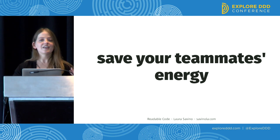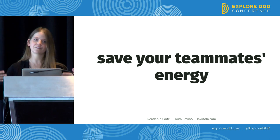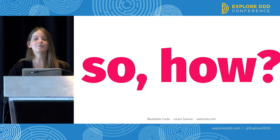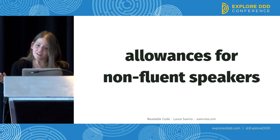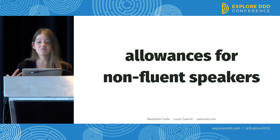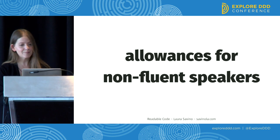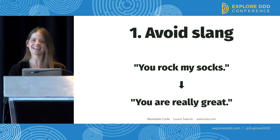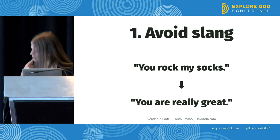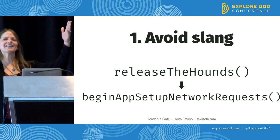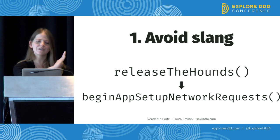So let's imagine that you believe this — that decipherable code is not enough, that we're really striving for readability and thinking hard about our readers. It can be hard to know what to do. You understand the code you wrote — how can you predict what will make it easy or hard for a reader, maybe someone you haven't even met? We can take a clue from our interactions with non-native speakers of our language, because we're used to changing our speech when we talk to people communicating in their second or third language. For example, you stop using so many idioms and slang — instead of 'you rock my socks,' you say 'you are really great.' In code, you're not going to use in-joke sorts of names like 'release the hounds' — I don't know what that does. Choose names as straightforwardly as you can: 'begin app setup network requests.'